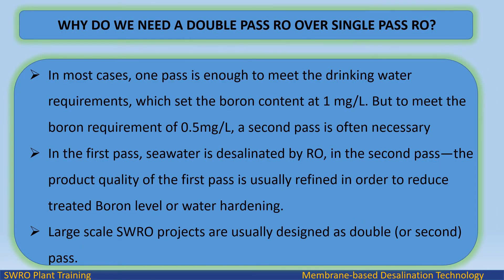In most cases, one pass is enough to meet the drinking water requirements, which set the boron content at 1 milligram per liter. But to meet the boron requirement of 0.5 milligrams per liter, a second pass is often necessary. In the first pass, seawater is desalinated by RO, while in the second pass, the product quality of the first pass is usually refined in order to reduce treated boron level or for water hardening.